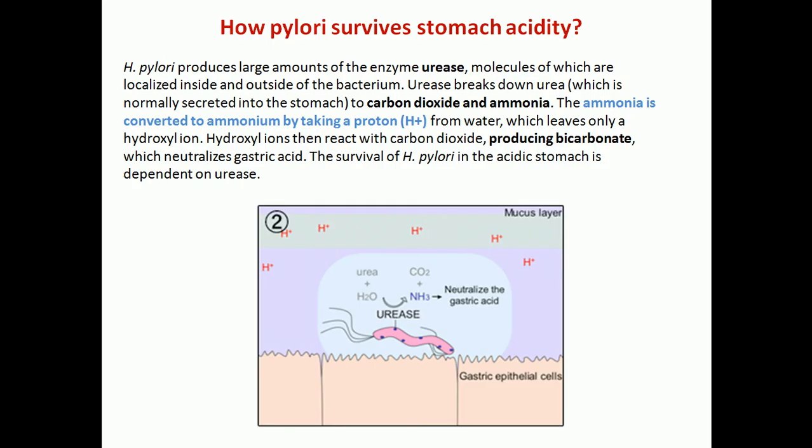The most important and interesting part about the Helicobacter pylori topic is how H. pylori survives the stomach acidity. We know that it produces urease, and the mechanism is basic: urease is an enzyme that breaks down urea into ammonia and carbon dioxide.